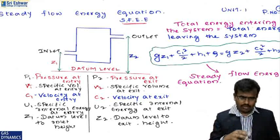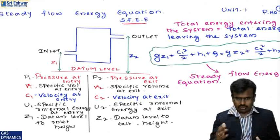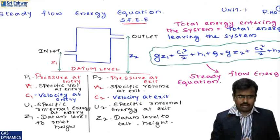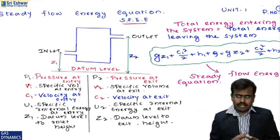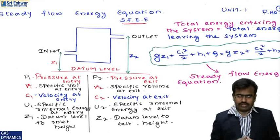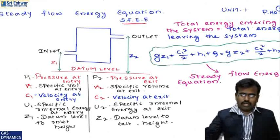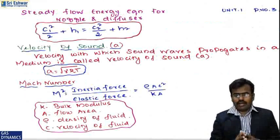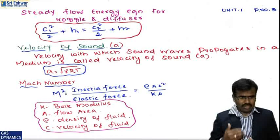From the drawing, z1 and z2 are defined. From section 1, the pressure at entry is p1, specific volume is v1, and the speed of gas or fluid is c1. u1 is the specific internal energy, and z1 is the datum level to inlet height. Similarly for section 2. The steady flow energy equation for the nozzle/diffuser is a separate equation: c1²/2 + h1 = c2²/2 + h2.